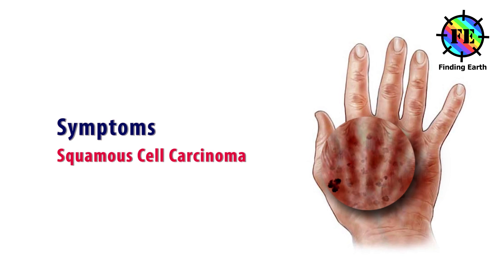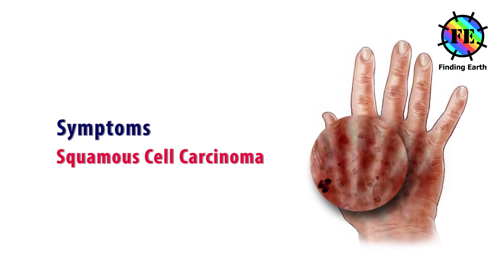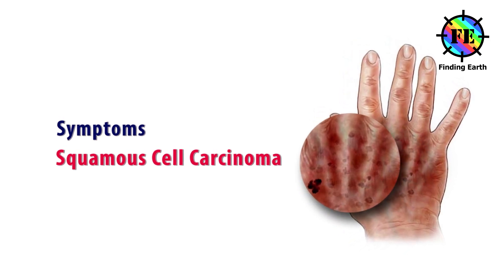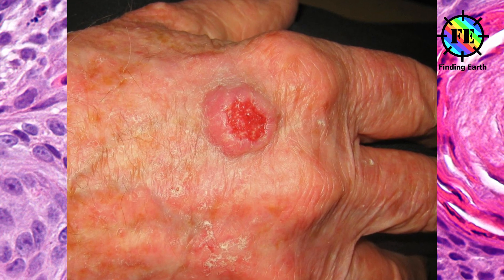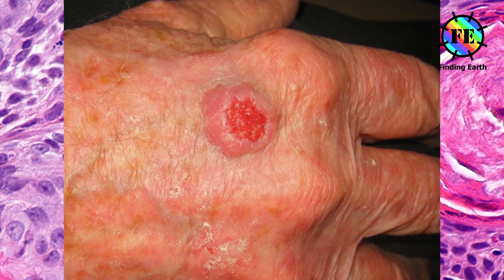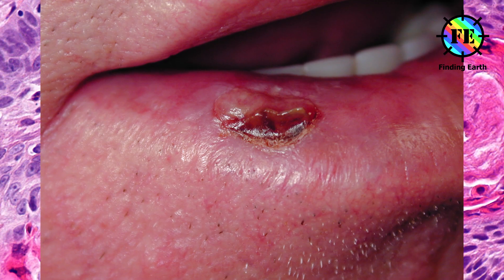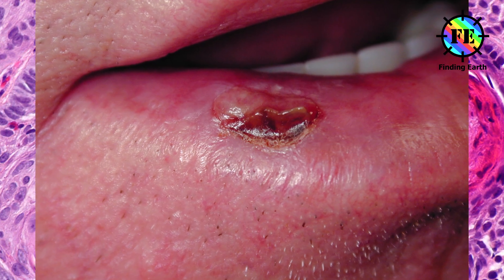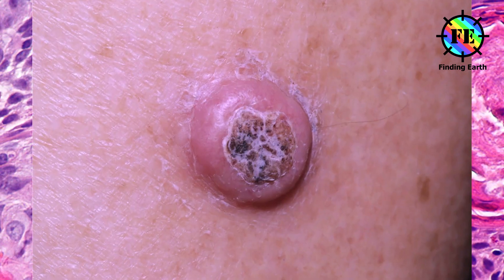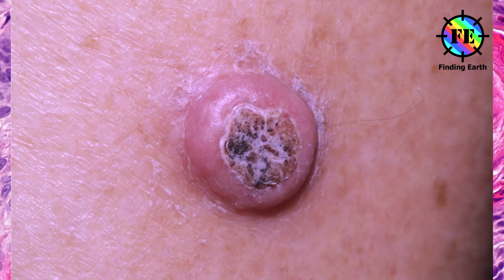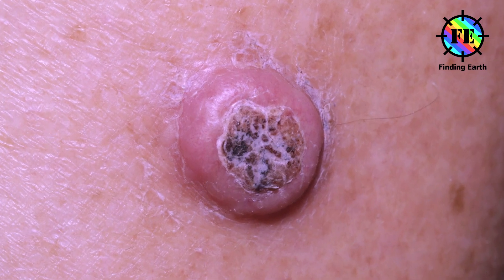Squamous cell carcinoma. SCC appears as a firm pink lump and may have a flat, scaly and frosted surface. The lump is often tender to touch, bleeds easily, and may develop into an ulcer.